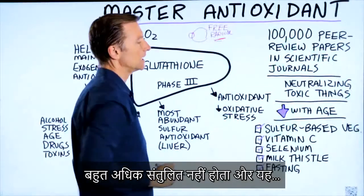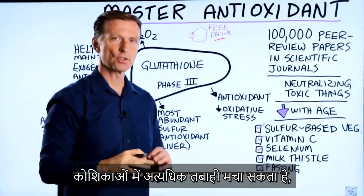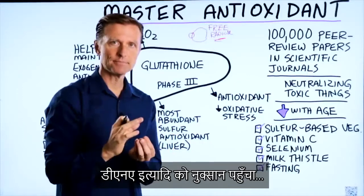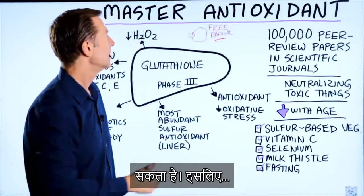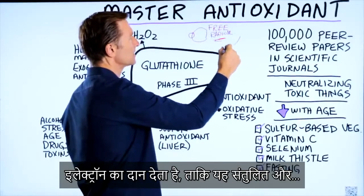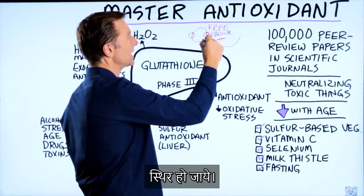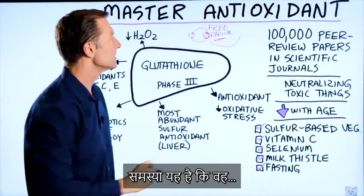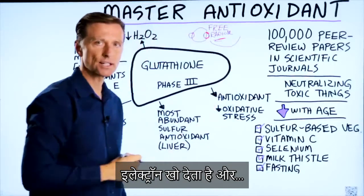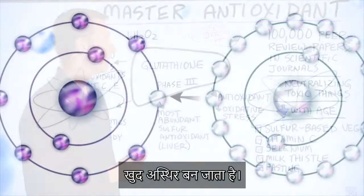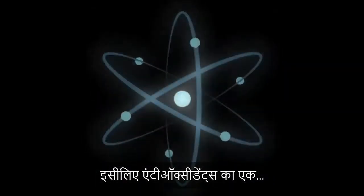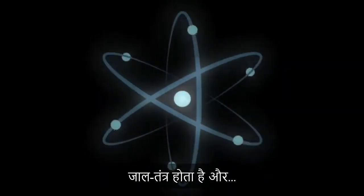A free radical is not very balanced, and it can create a lot of destruction throughout the cells, the cell machinery, the DNA, et cetera. So an antioxidant comes along and donates an electron to balance it out and stabilize it. The problem is that antioxidant now loses its electron and becomes unstable, so it has to get an electron from another antioxidant. This is why you have antioxidants in networks.